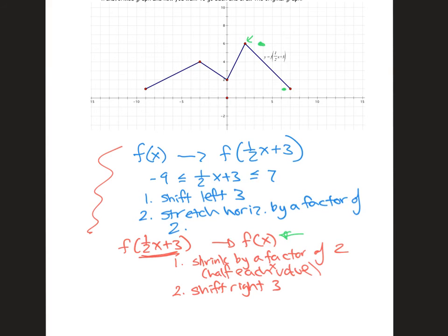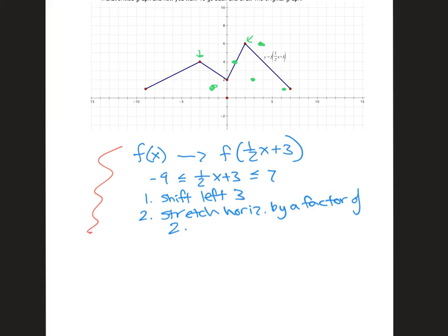Half of negative three is negative 1.5 and then shifting to the right three is negative 0.5. So we're up here. And then this last point, half of negative nine is negative four and a half and then right three is negative one and a half so I'm there.